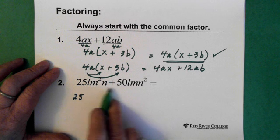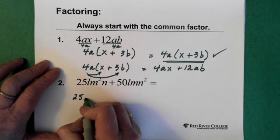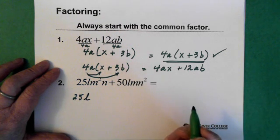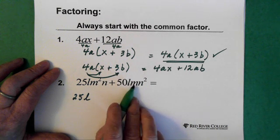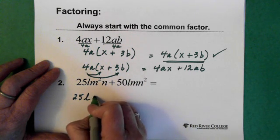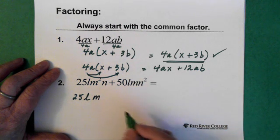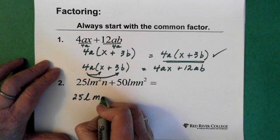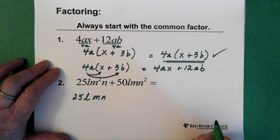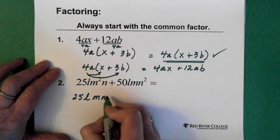There's an L in this term and an L here. So L is common to both terms. We have an M squared and an M here. So M is common to both terms. And we have an N here and an N squared. So N is common to both terms.